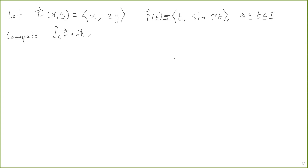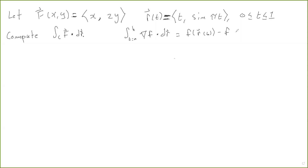Now, we know how to do that — we could just use the formula we know — but instead I want to use the fundamental theorem of line integrals. The fundamental theorem of line integrals says that the integral from t equals a to b of the gradient of f dotted with dr is just equal to f of r of b minus f of r of a.